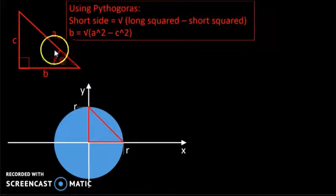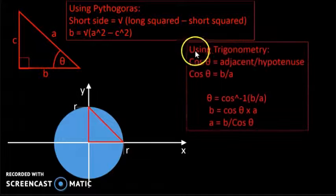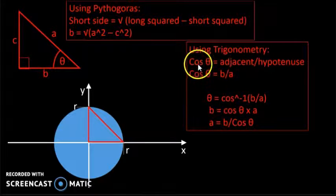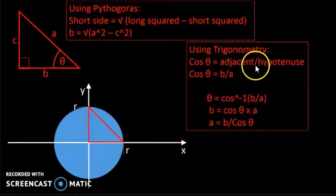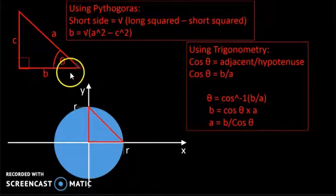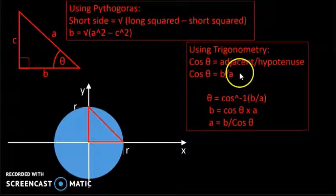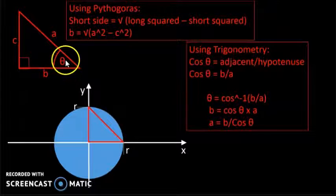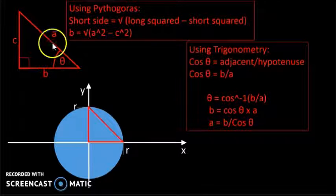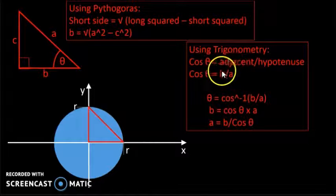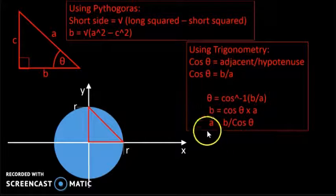If we know an angle theta, we can use a trigonometric ratio to find either the angle or one of the sides. The trigonometric ratio says that cos of theta equals the adjacent side divided by the hypotenuse, so cos of theta equals B divided by A. As long as there is only one unknown, we can use the two knowns to find it.